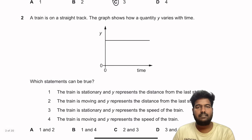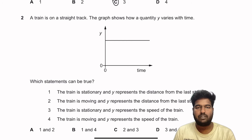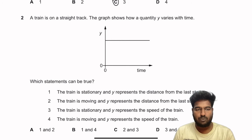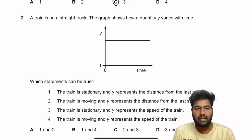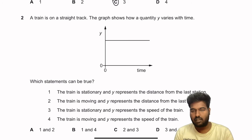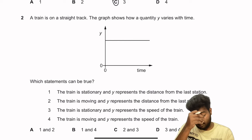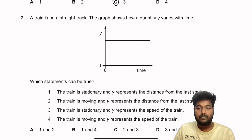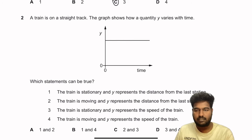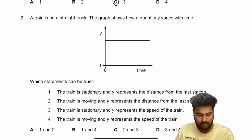Question 2: A train is on a straight track. The graph shows how quantity Y varies with time — they don't define what Y is. Option A: the train is stationary and Y represents the distance from the last station. That is possible because if the train is stationary, the distance from the last station won't change, so Y would be a horizontal straight line. This is true.